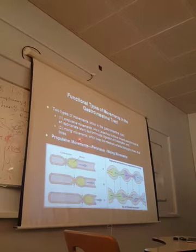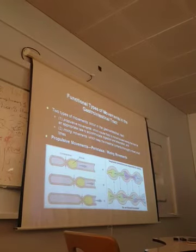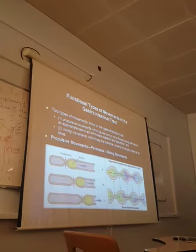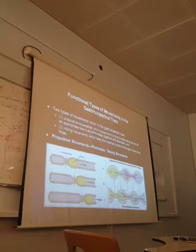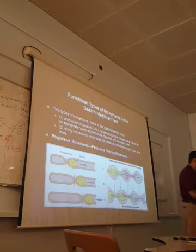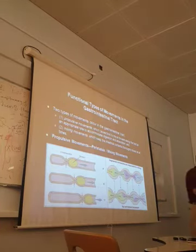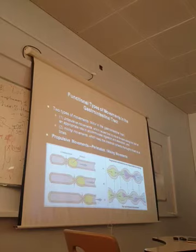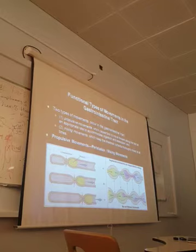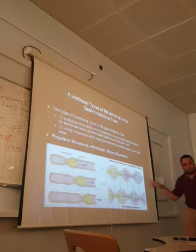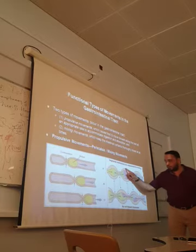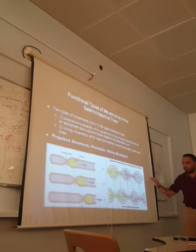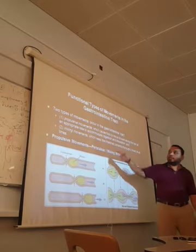Types of movements: propulsive movements and mixing movements. Mixing movements are also called segmental contractions - 'segment' means parts. They are also called chopping movements. Food present inside a specific part of the GIT - that particular part will contract simultaneously here, here, here, here - like chopping the food. Then the next alternating segments contract, so the food is chopped up but not moving forward. That is why they are called mixing movements.